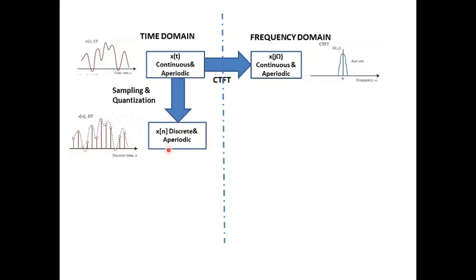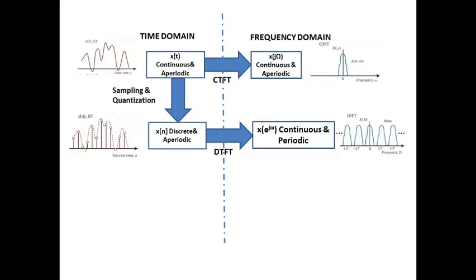Equivalently, the discrete signal represented in time domain should also be represented in frequency domain. Hence the transformation applied is called Discrete Time Fourier Transform (DTFT). When you perform DTFT, you get X(e^{jω}), which is continuous and periodic in nature. Observe the relationship: in CTFT you have information in one pulse, whereas in DTFT this information is replicated for an infinite amount of time — hence it is called continuous and periodic.